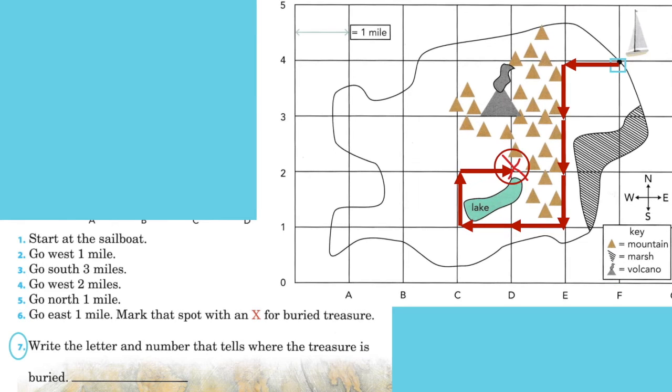Now, number seven. It says write the letter and number that tells where the treasure is buried. Let's go down and we'll find the number, the letter. There's the letter D. And then go to the left and you'll find the number two. So we need to write D2. Good.